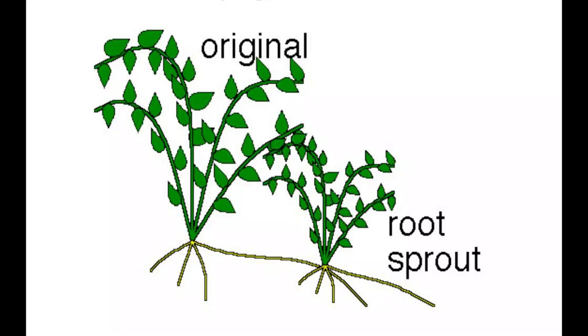Propagative roots produce above-ground growths called suckers, which can become new plants. Suckers are often found in and around tree roots.